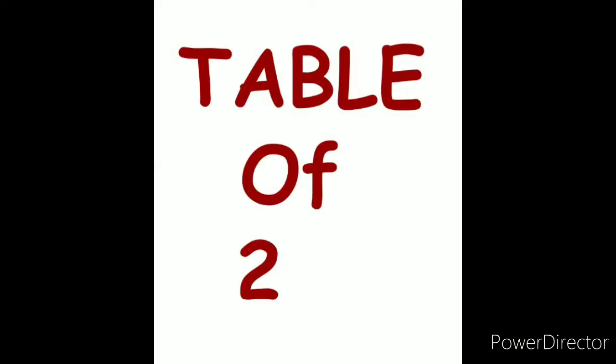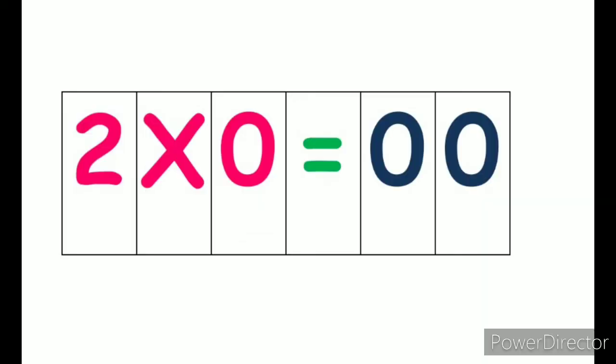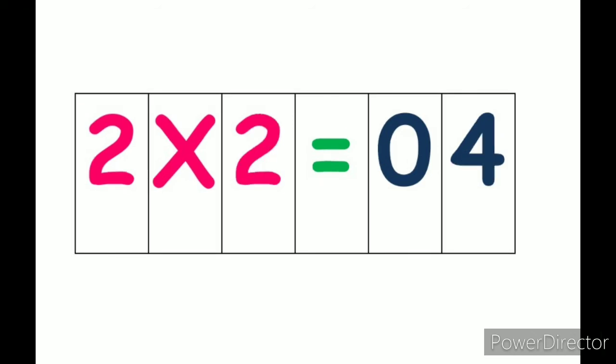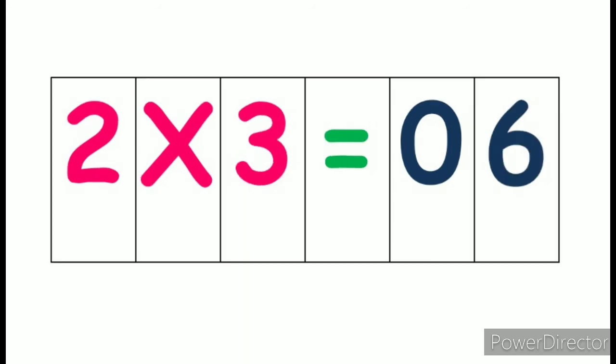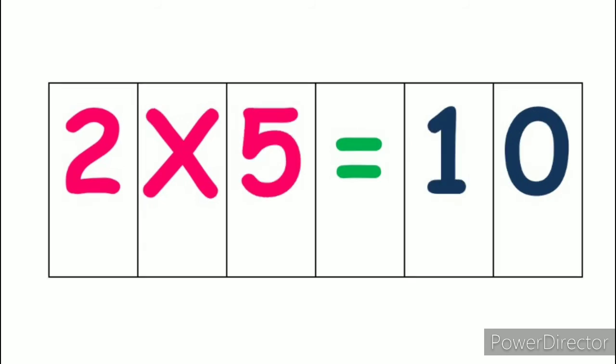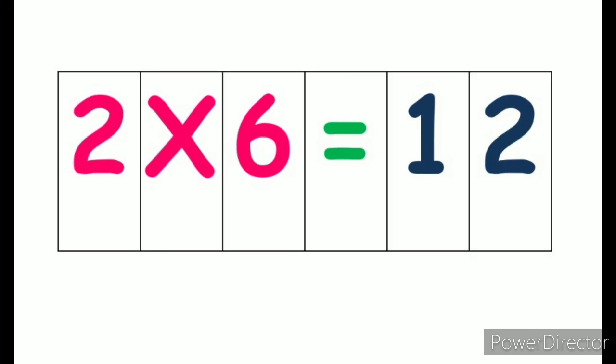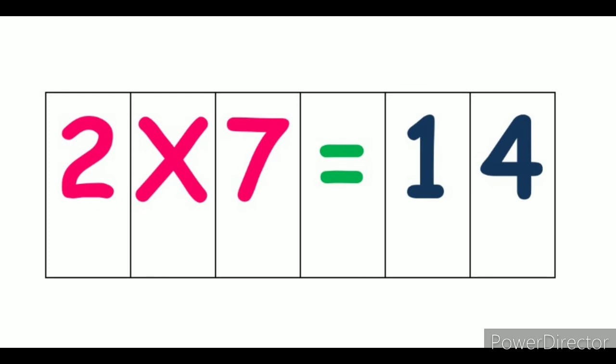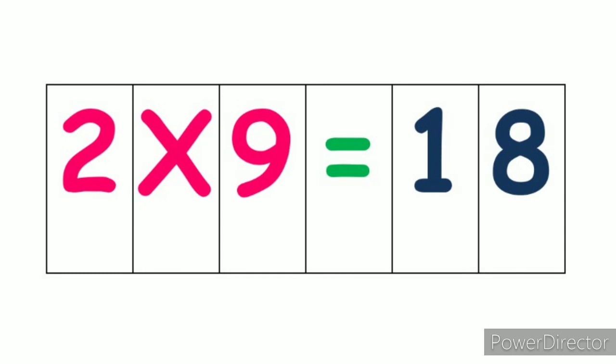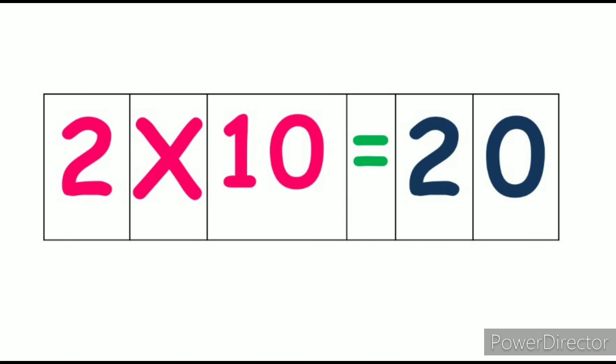Now we are going to recite the table together. I will say it once and after me you will repeat it. 2 zeros are 0, 2 ones are 2, 2 twos are 4, 2 threes are 6, 2 fours are 8, 2 fives are 10, 2 sixes are 12, 2 sevens are 14, 2 eights are 16, 2 nines are 18, 2 tens are 20.